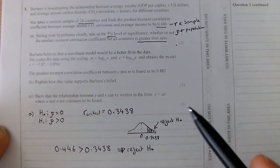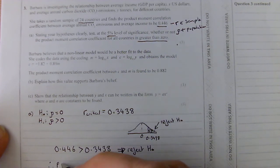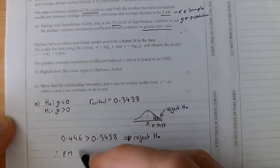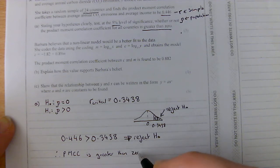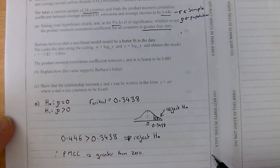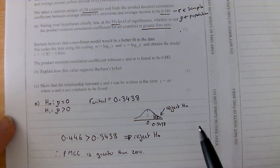Well, yes, we found that it is greater than 0. So, therefore, PMCC is greater than 0. Or you could say something like, there is sufficient evidence that there is positive correlation between carbon emissions and income.